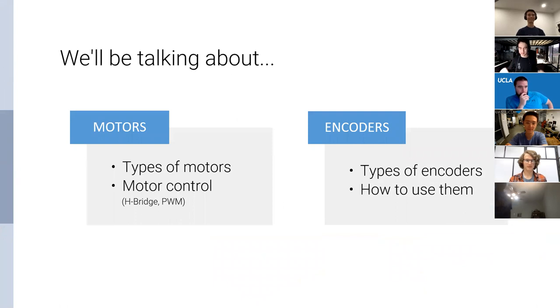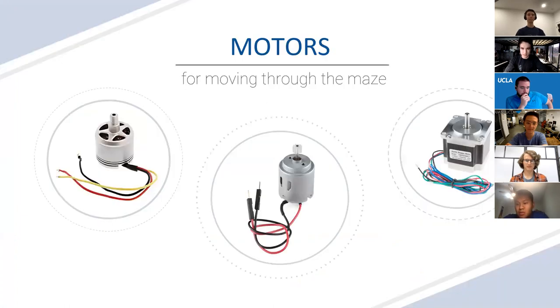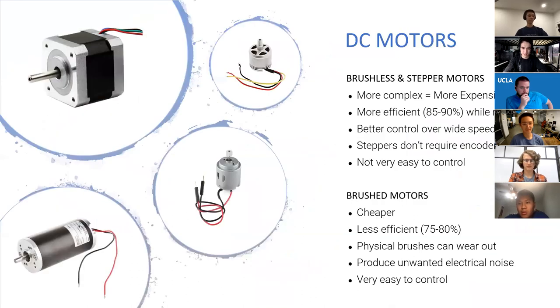So today's lecture, we'll be talking about motors, a bunch of different types, and then a little bit how to control them. And then we'll be talking about encoders, which are used to help the rat know where it is. They read the motors pretty much.